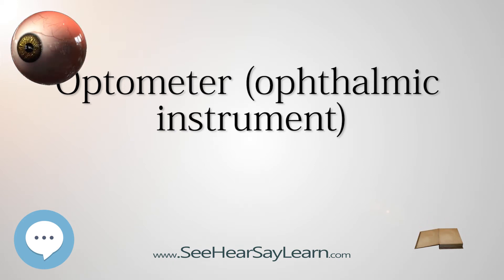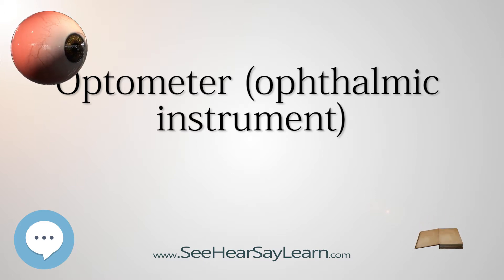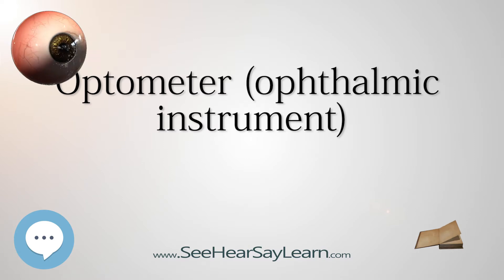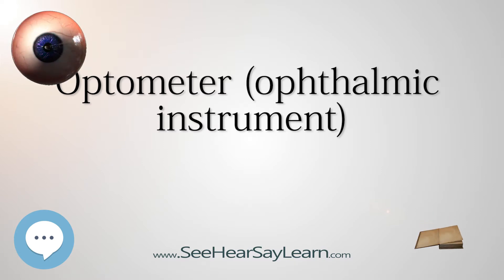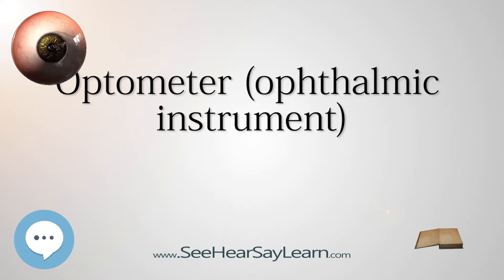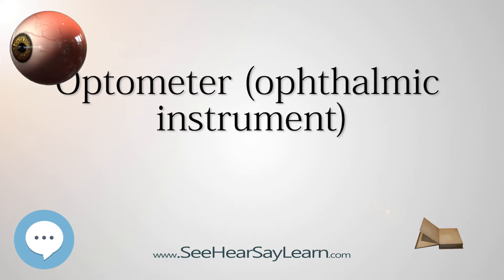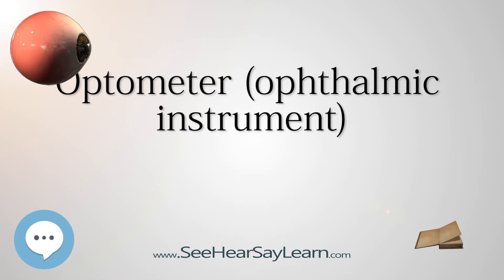The term, coined in 1738 by W. Porterfield to describe his shiner slit optometer, was used for 200 years to describe many different inventions to measure refractive error of the eye. It has completely fallen out of usage today, as the task of measuring eyes for spectacles is done with modern instruments, such as the phoropter.